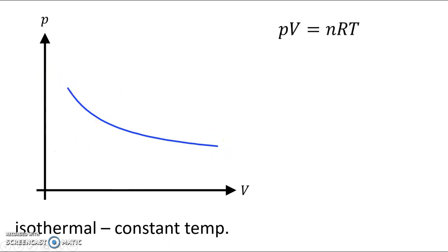Why would an isothermal process have an inverse shape? Well, we know that PV equals nRT. We're talking about an ideal gas as our system. This is the equation of state for an ideal gas.